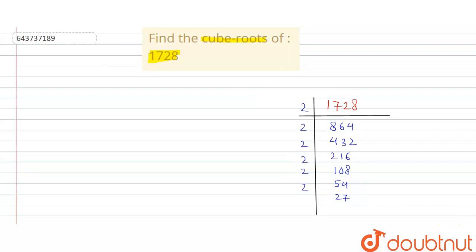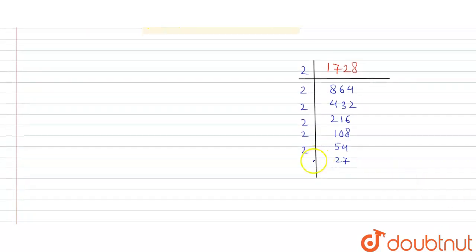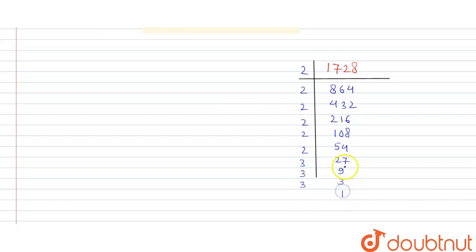Now 27 is not divisible by 2, so we are dividing this by 3. This is nine times. Then again 3, so this is 3 and this is 1.